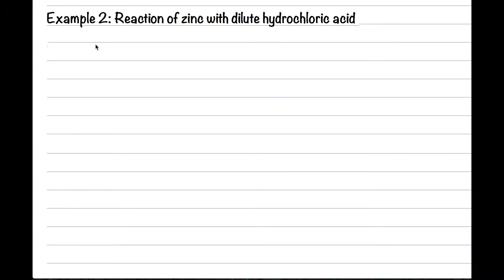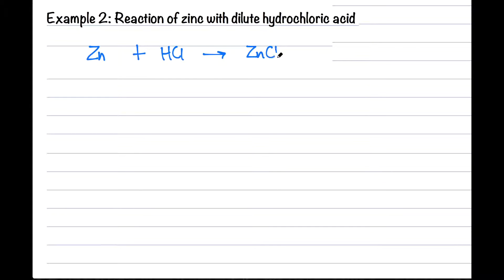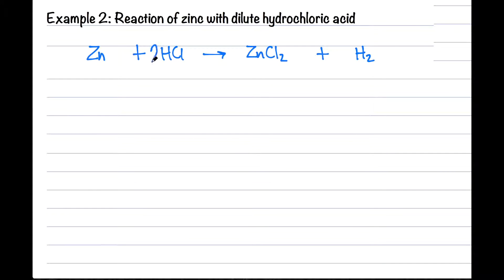Let us change the words into chemical formula first. You should know the chemical formula for zinc chloride — it is made of zinc 2+ ions and chloride ions. Let's check if the equation is balanced, then add in the state symbols. Zinc is a solid metal, so it gets state symbol (s). Dilute hydrochloric acid is (aq), zinc chloride is a soluble salt so it's (aq), and hydrogen gas bubbles off so it is (g).